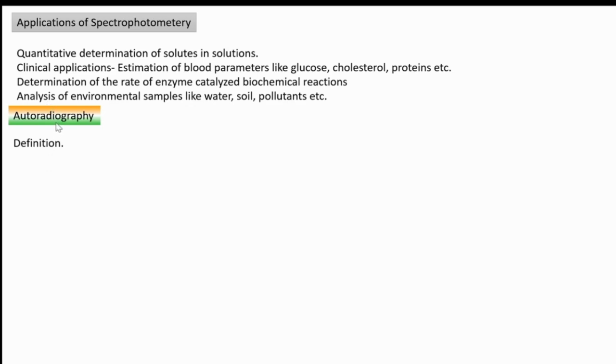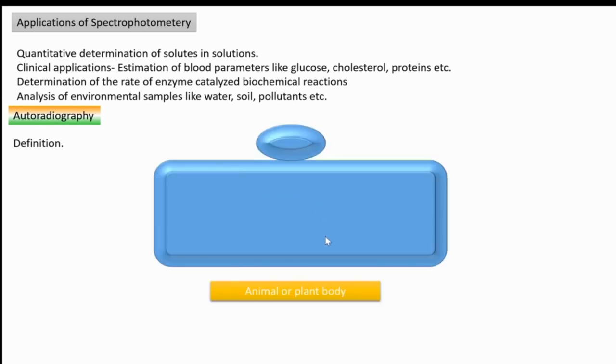What is autoradiography? Autoradiography means in a particular animal or plant's body, we need to understand the movement of a particular material. For that we are using certain radioactive isotopes. These radioactive isotopes we are incorporating in the body of this plant or animal and attached with this material that we need to trace. Trace means we need to trace the path of this material in the body of this animal or plant. That is the actual purpose of autoradiography.